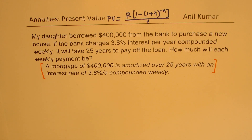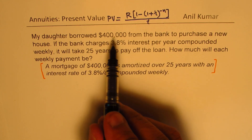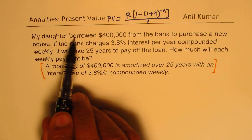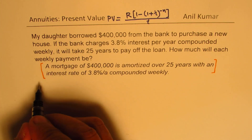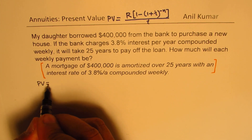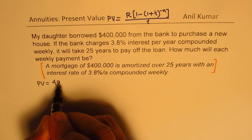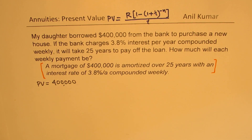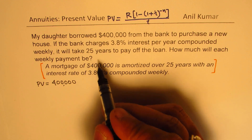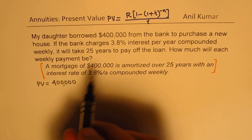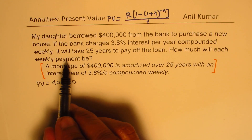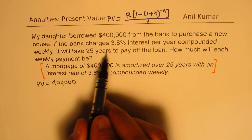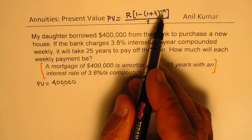In our case, what are we given? We are given the present value — my daughter borrowed so much from the bank, so the present value of the money borrowed is $400,000. It's going to be very expensive, but the payment has been made over 25 years. Second, it will take 25 years to pay off the loan.